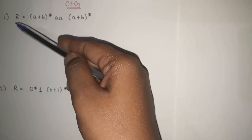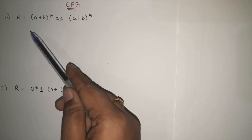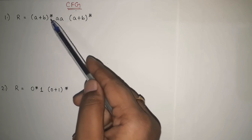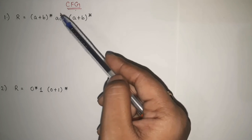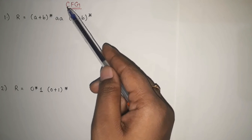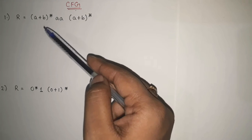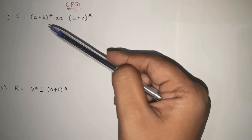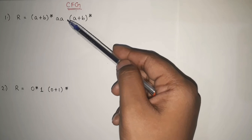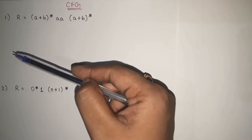In the first example, what is given: R — which means regular expression — equals (a+b)* aa (a+b)*. Now the easiest way to do this, before constructing the context free grammar, the easiest step is first of all try to generate the language — which strings can be generated by this regular expression. And with the help of those strings, we can then generate the CFG.